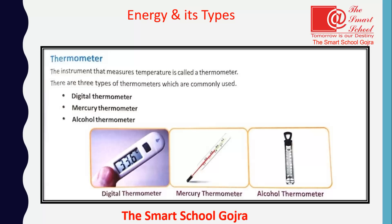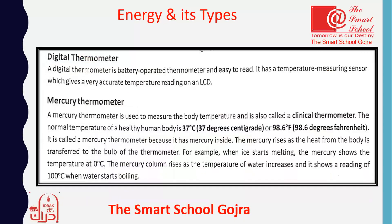mercury thermometer, and alcohol thermometer. Woh bataata hai ke jho thermometer hum use kertae hain, uski teen types hain: digital thermometer, mercury thermometer, aur alcohol thermometer. Yeha figure mein bhi dheekh sakte hain. Pahle hum padtate hain digital thermometer.